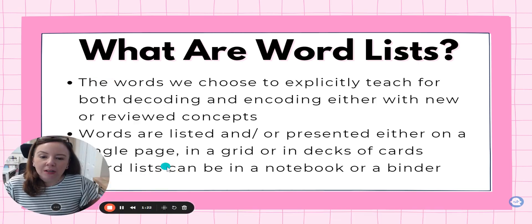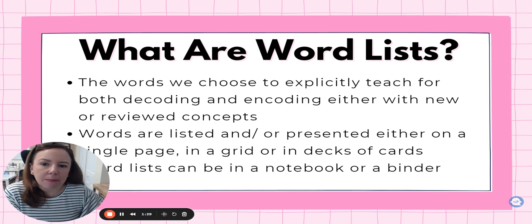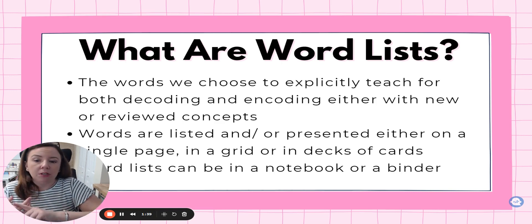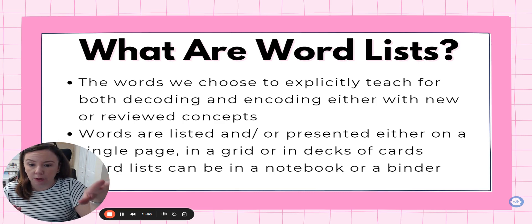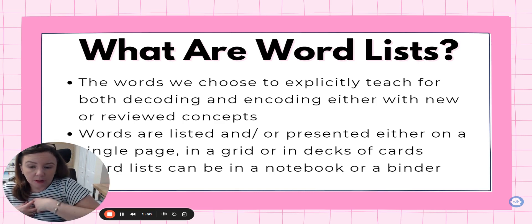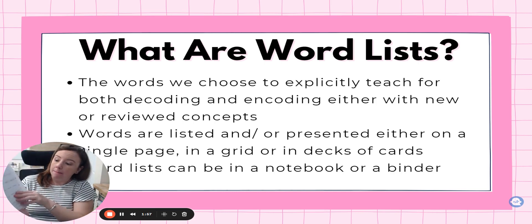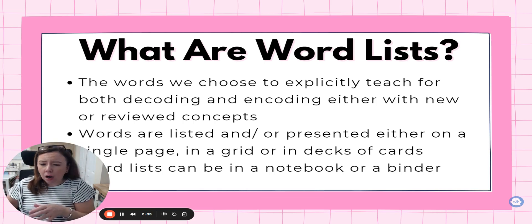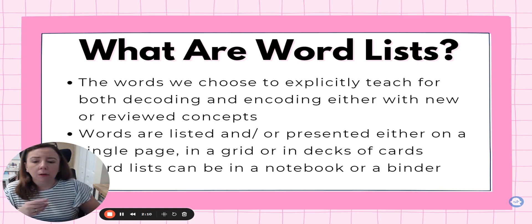If you are sort of new to the idea of using word lists, I want to share a few ideas. The words we choose are ones we want to teach explicitly — not only for decoding, but also for encoding. The words we choose are either going to be new words or review. They can be listed on a single page like this one right here, put into a grid, decks of cards, or a notebook or binder so you have a whole collection to refer back to.